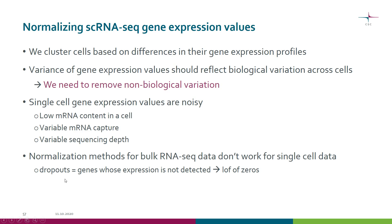Because single-cell data is characterized by dropouts — in other words, genes whose expression is not detected. The gene itself might be expressed; we just don't detect the expression. So in the data, we have lots of zeros.